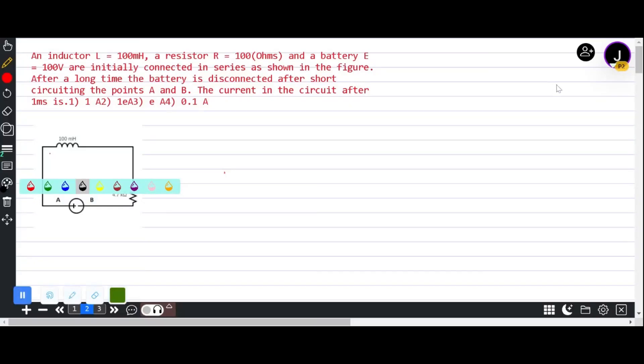This problem has an inductor L equals 100 millihenry, a resistor R equals 100 ohms, and a battery E equals 100 volts initially connected in series. After a long time, the battery is disconnected and points A and B are short-circuited. The current in the circuit after 1 millisecond is what needs to be found.